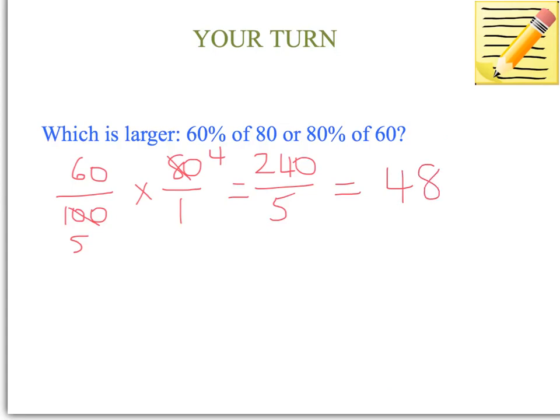Okay, now 80% of 60, so 80 over 100, times 60 over 1, cancelling out. My goodness, it looks like it's the same.